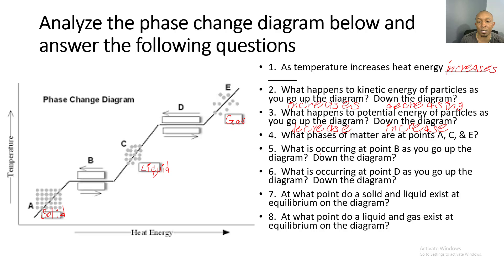Number five: what is occurring at point B as you go up the diagram? At point B going up, we have the solid melting and turning into a liquid. And what is occurring at point B as we go down the diagram? Going down, that liquid is going to freeze into a solid.